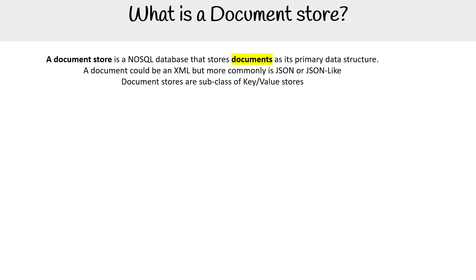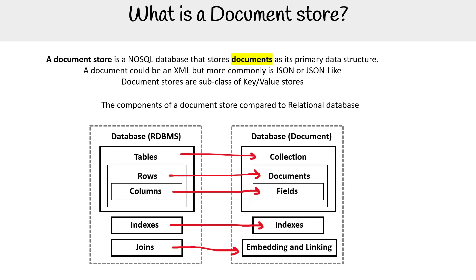The main difference is that they can store nested dictionaries, nested hashes. The components of a document store compared to a relational database is the easiest way to explain it. Where you would have tables, they call them collections; where you'd have rows, they call them documents; where you have columns, they call them fields; and indexes are the same.